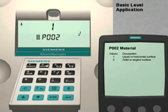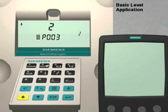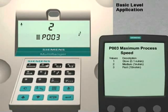Parameter number 2 optimizes the multi-ranger for measuring either liquids or solids. The factory default value is set to 1 for liquid applications. We are going to leave it at this value. Press the up arrow key to move to the next parameter.